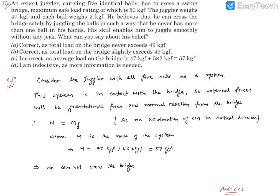Question number 15. It reads, an expert juggler carrying 5 identical balls has to cross a swing bridge. Maximum safe load rating of this bridge is 50 kg force.